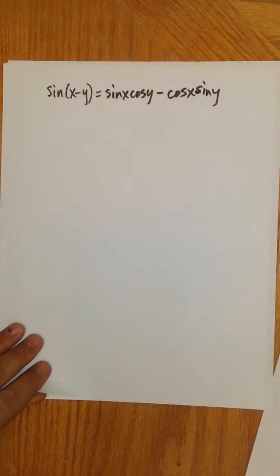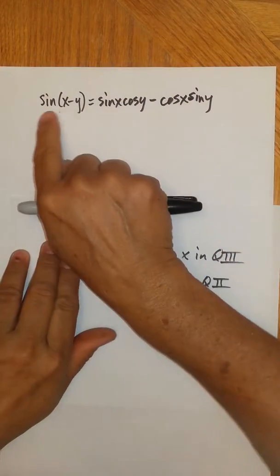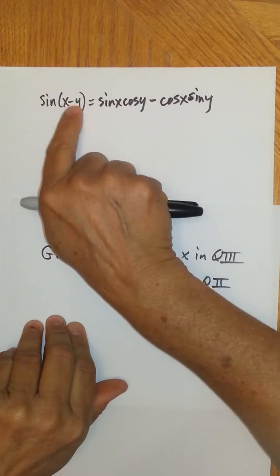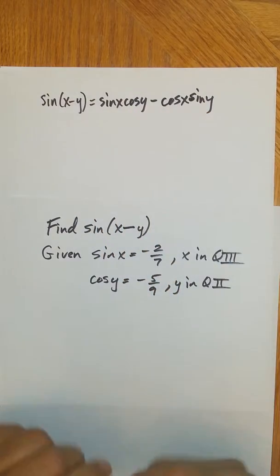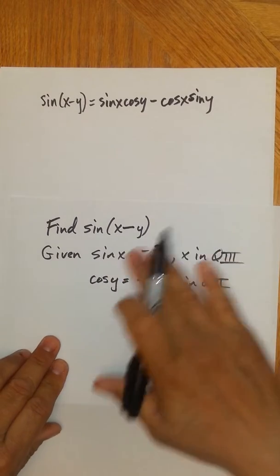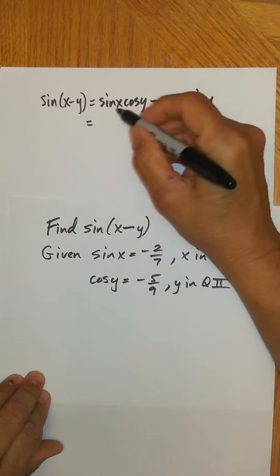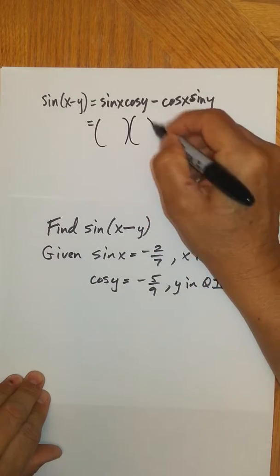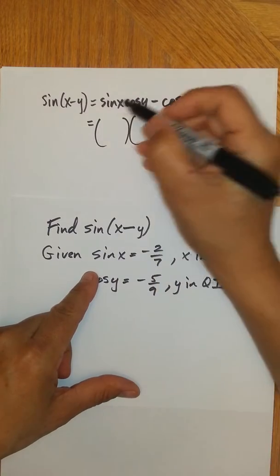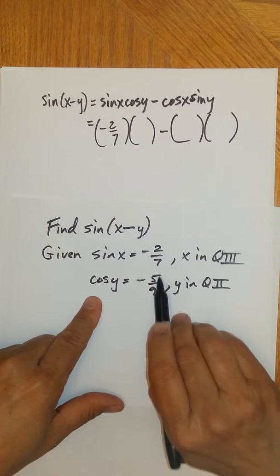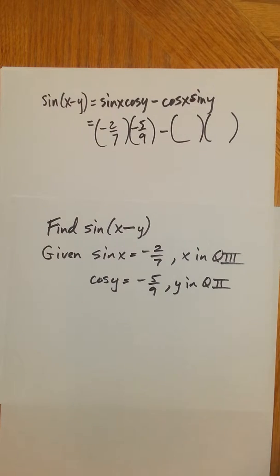So this is what we're finding. Notice that here you're taking the sine of two angles — the input has two angles in it — and here you have the sine of one angle, the cosine of one angle, and so on. What we want to do is use the given information to find the other missing values. Sine of x is negative two-sevenths, and cosine of y is negative five-ninths — I can already fill those in. I need to find the two remaining pieces.